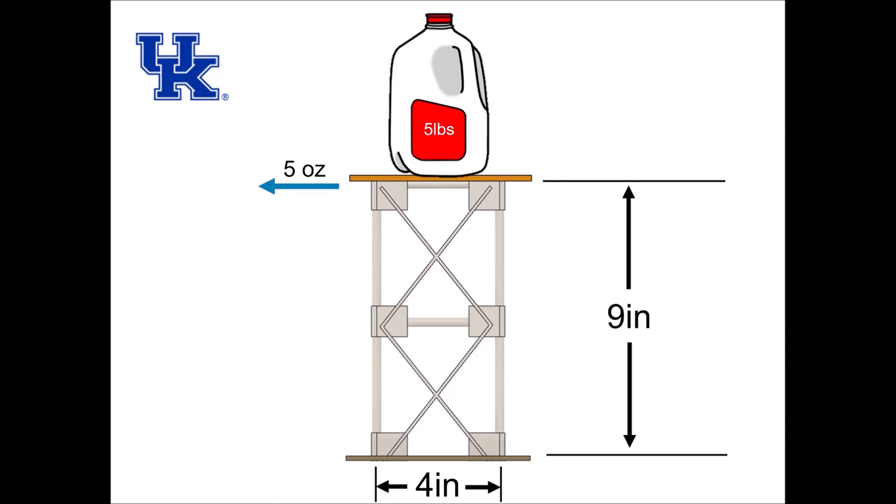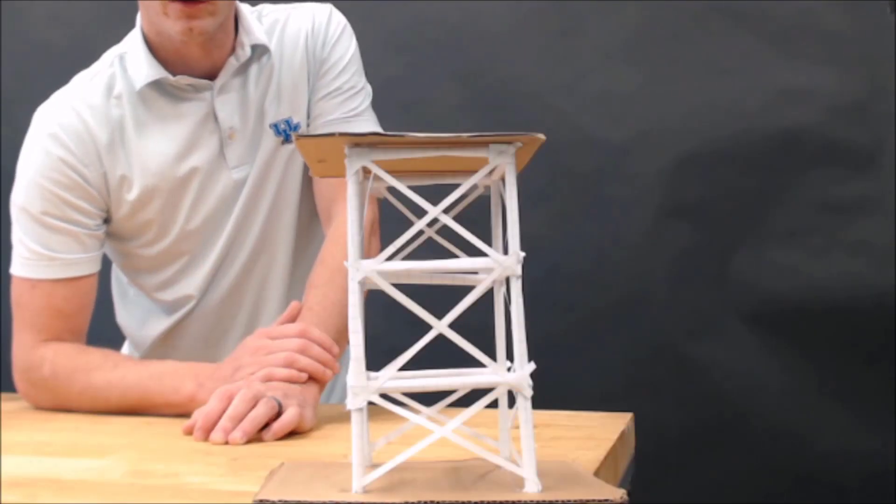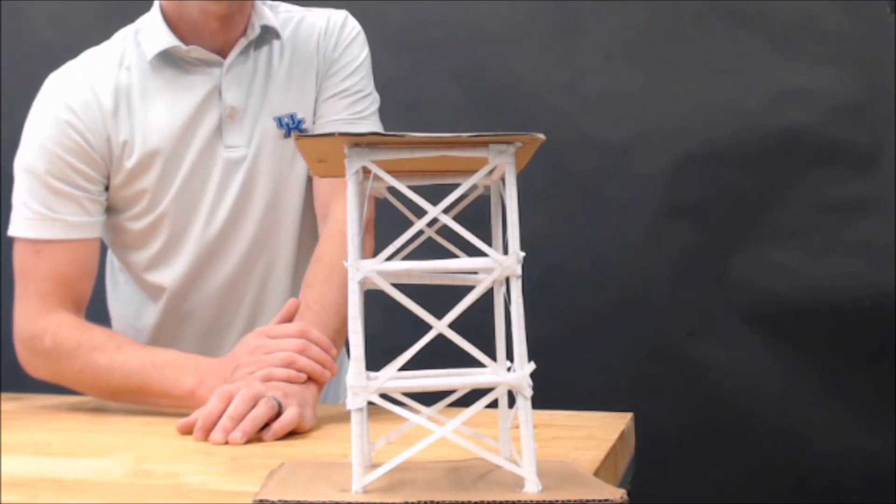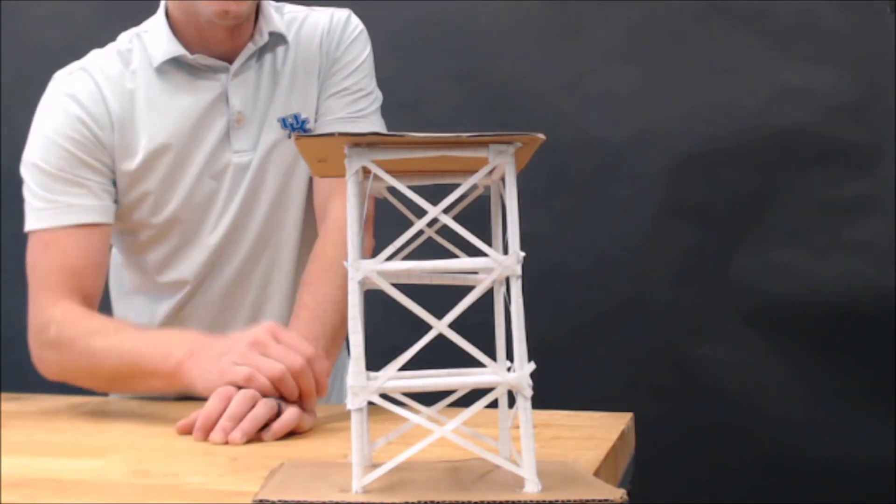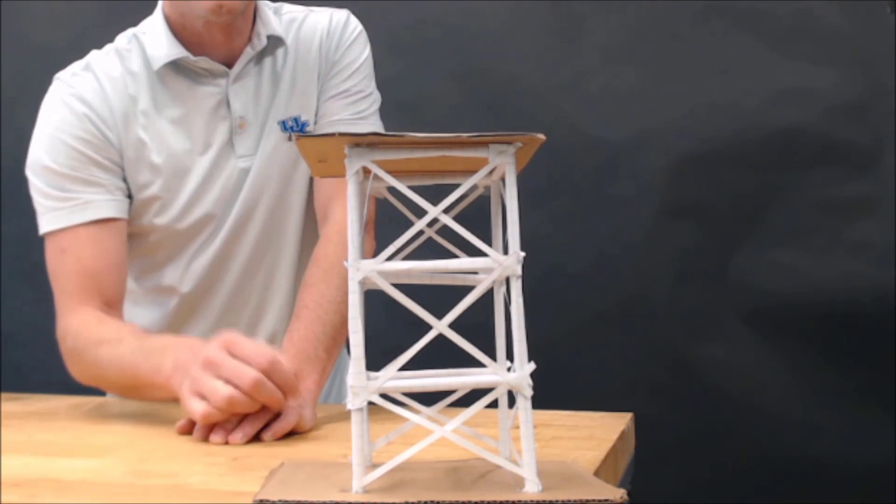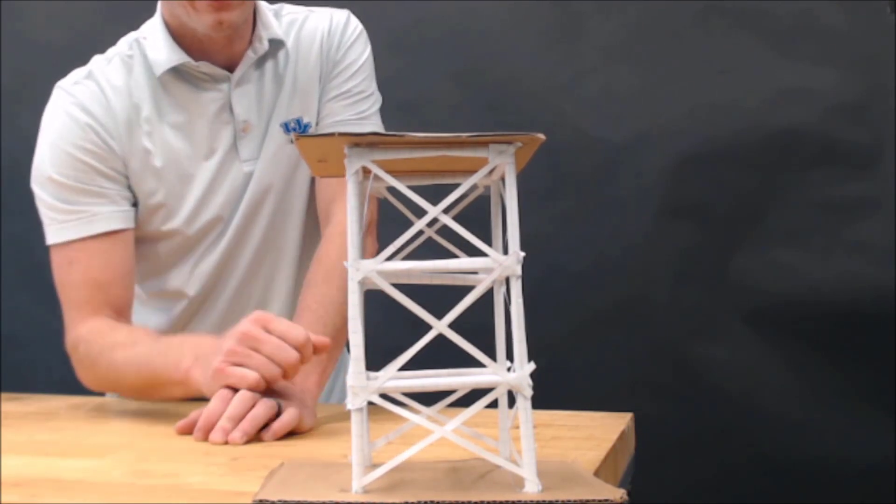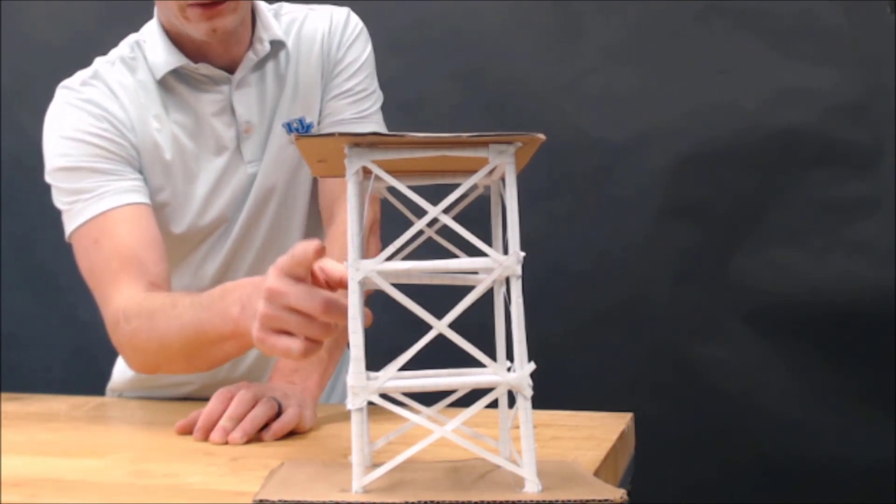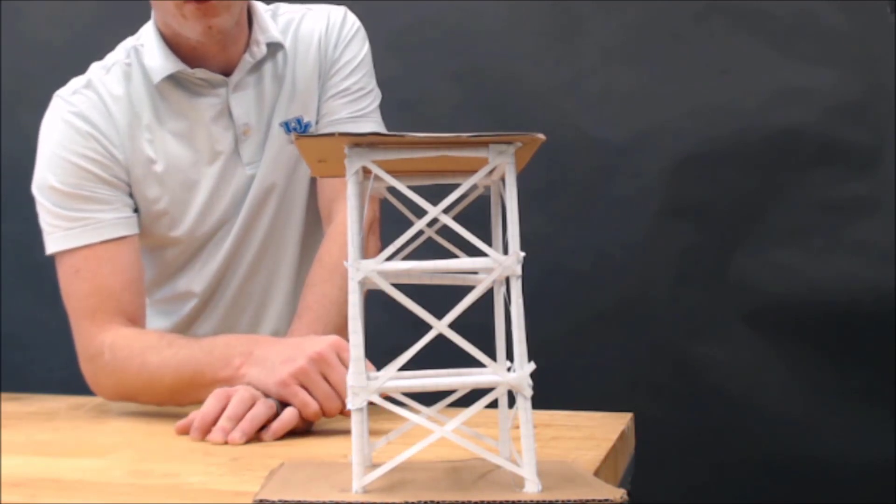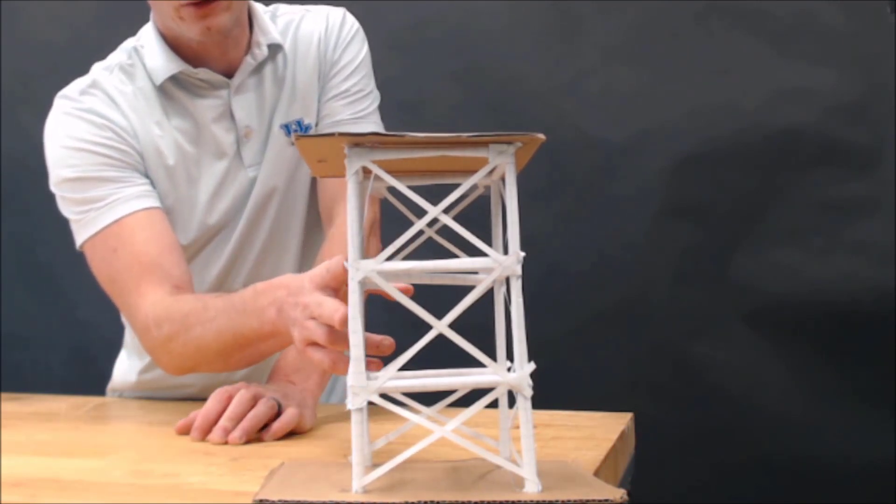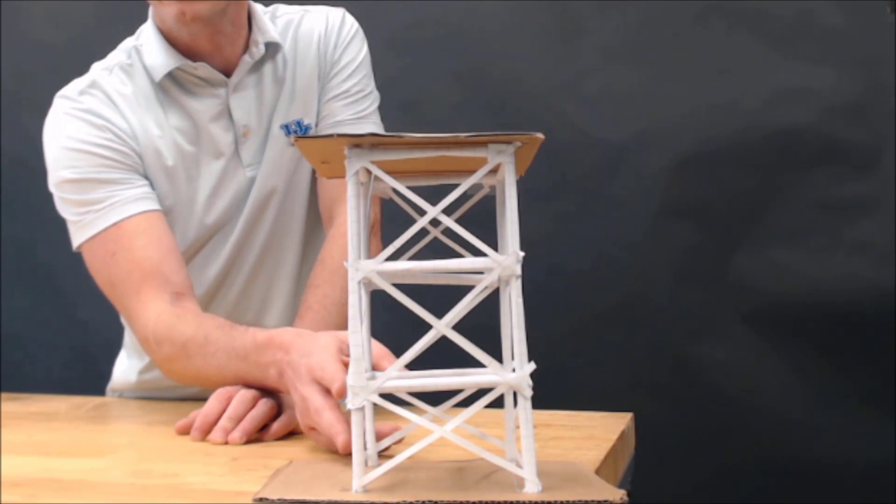Here's a graphic that shows the spacing along with the horizontal load applied. One design consideration we need to think about is how many layers we want to have. In our nine-inch structure we can either have two, which would be 4.5 and 4.5, three which is 3, 3, and 3, or four which is all 2.25, 2.25, 2.25, and 2.25.